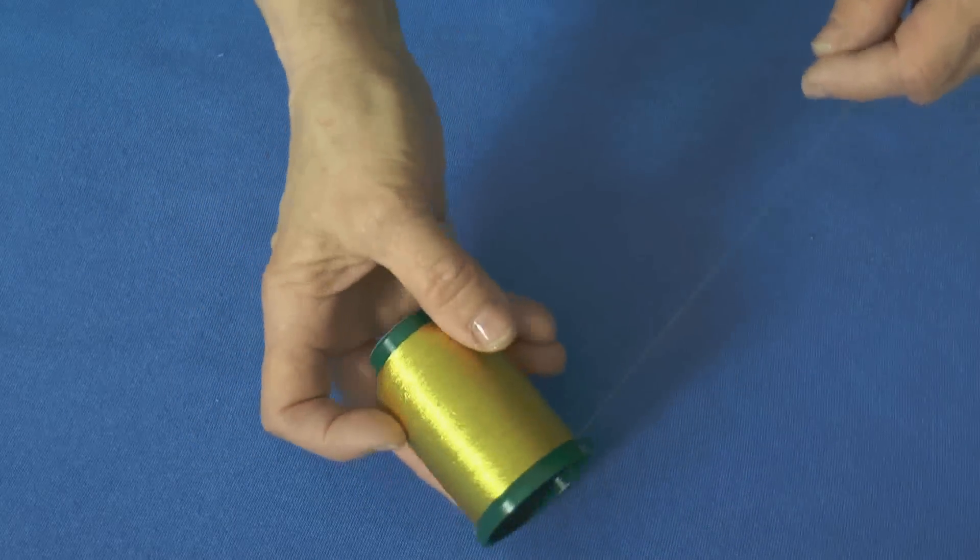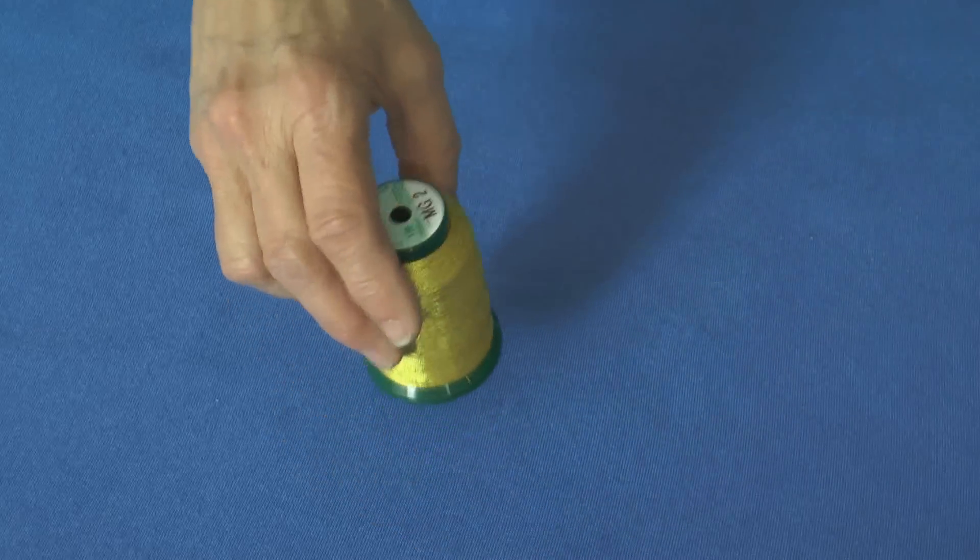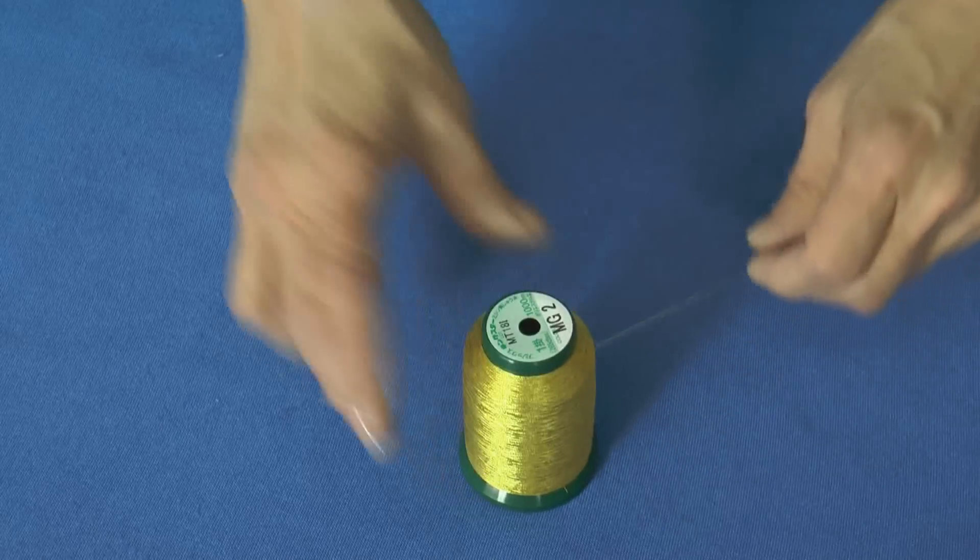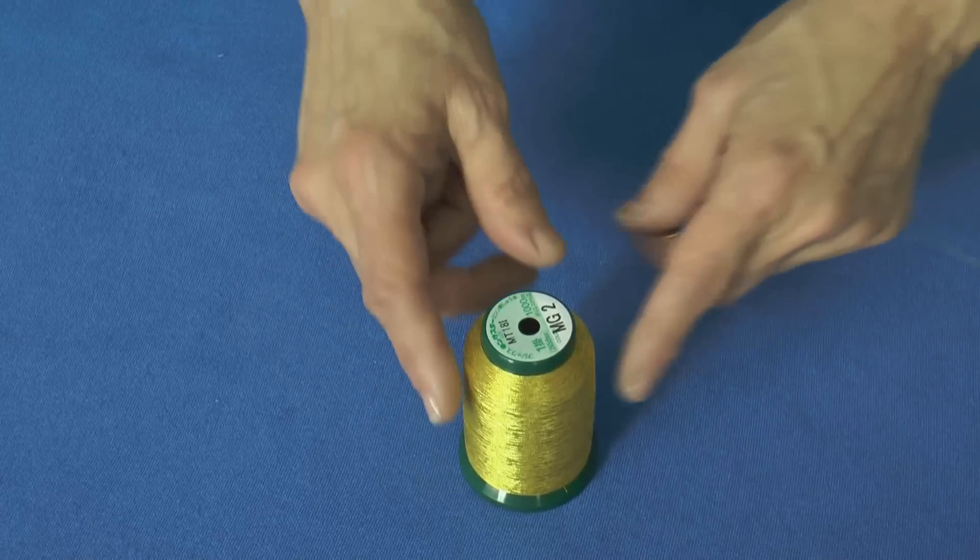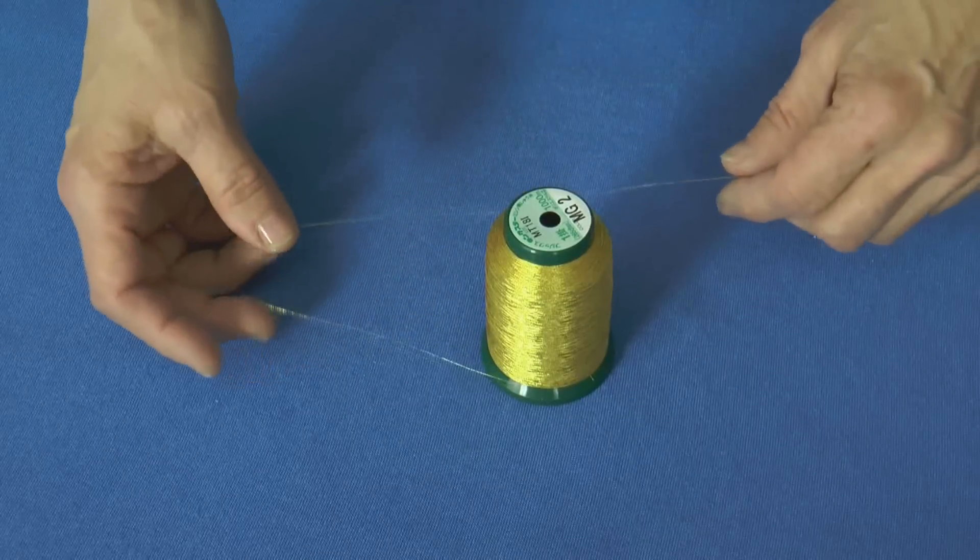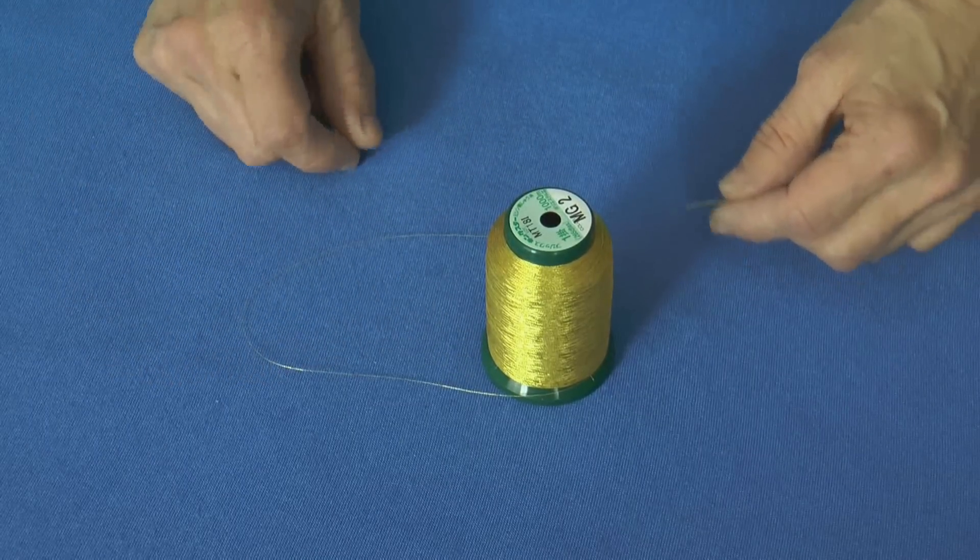So rather than putting tape or using any other kind of method or just leaving it dangling which wastes our thread, I'm going to show you how to tie a knot that will hold your thread securely onto the spool just like the knot they tie at the factory.